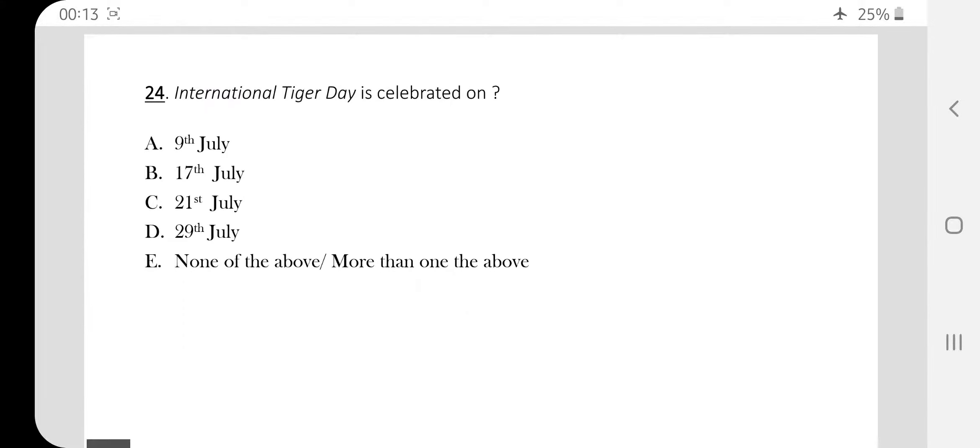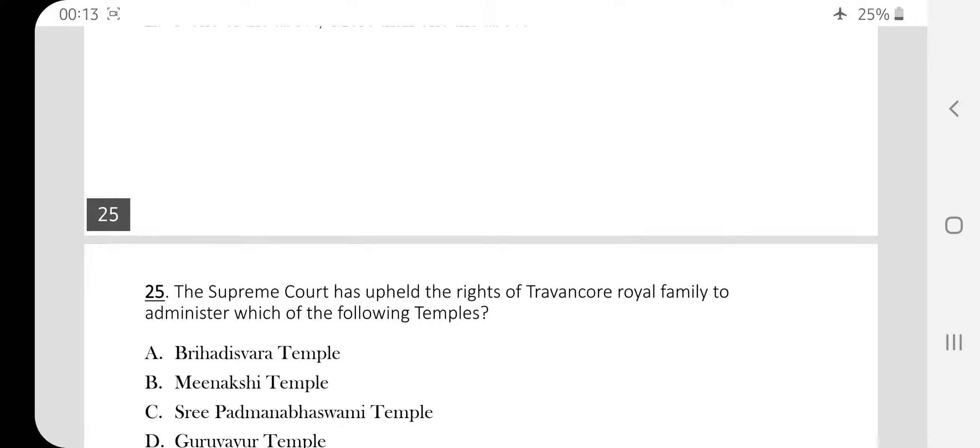Question number 24. International Tiger Day is celebrated on 29th July. Tigers were in the news a lot this year. Remember this, International Tiger Day 29th July.